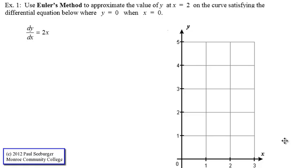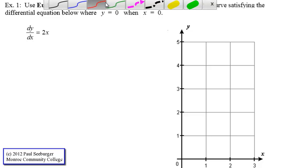Okay, let's take a look at example 1. We're going to use Euler's method to approximate the value of a function y at x equals 2 on the curve that satisfies the differential equation dy/dx equals 2x, where y equals 0 when x equals 0. So the initial condition point is (0,0).